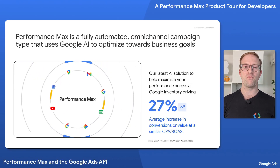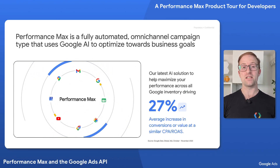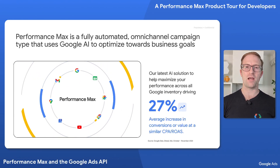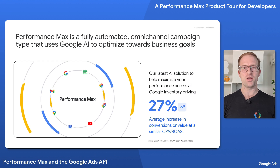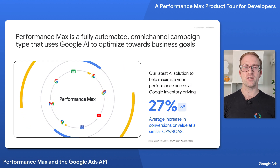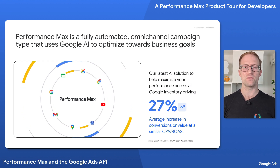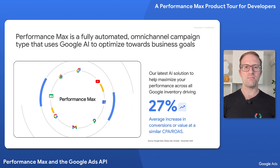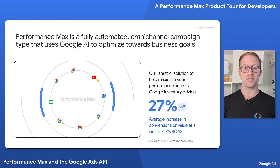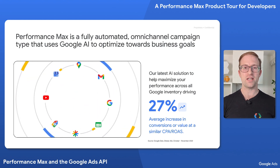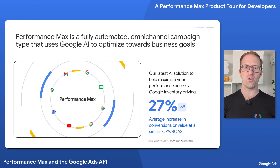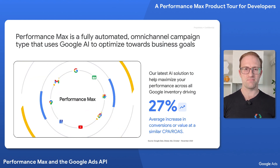For those not familiar with Performance Max, it is a fully automated, omni-channel campaign type that uses Google AI to optimise towards business goals. It is designed to make it easier for businesses to reach their marketing goals without the need to make micro-adjustments, freeing them to focus on their business.